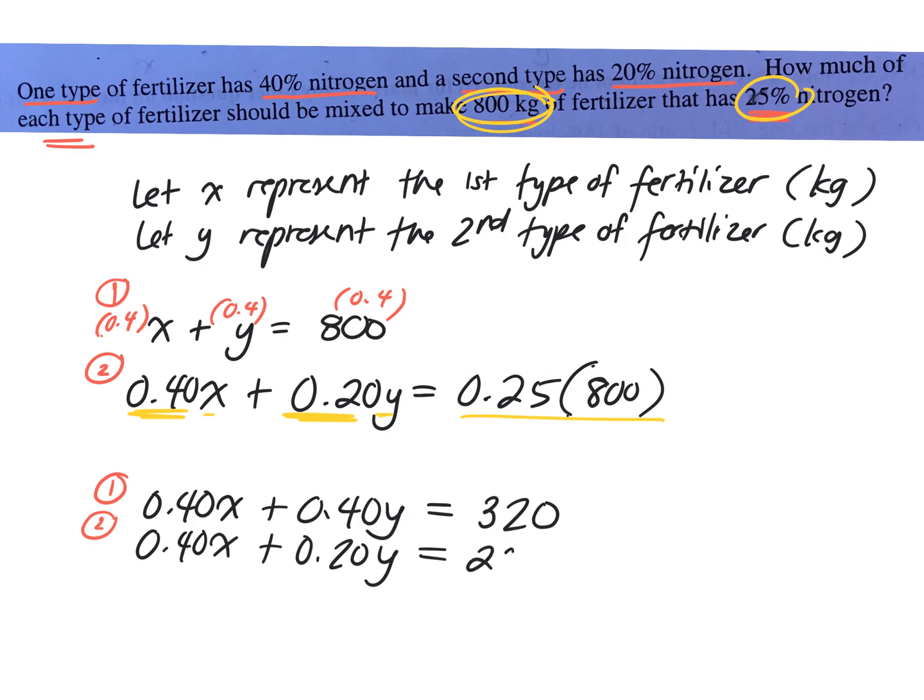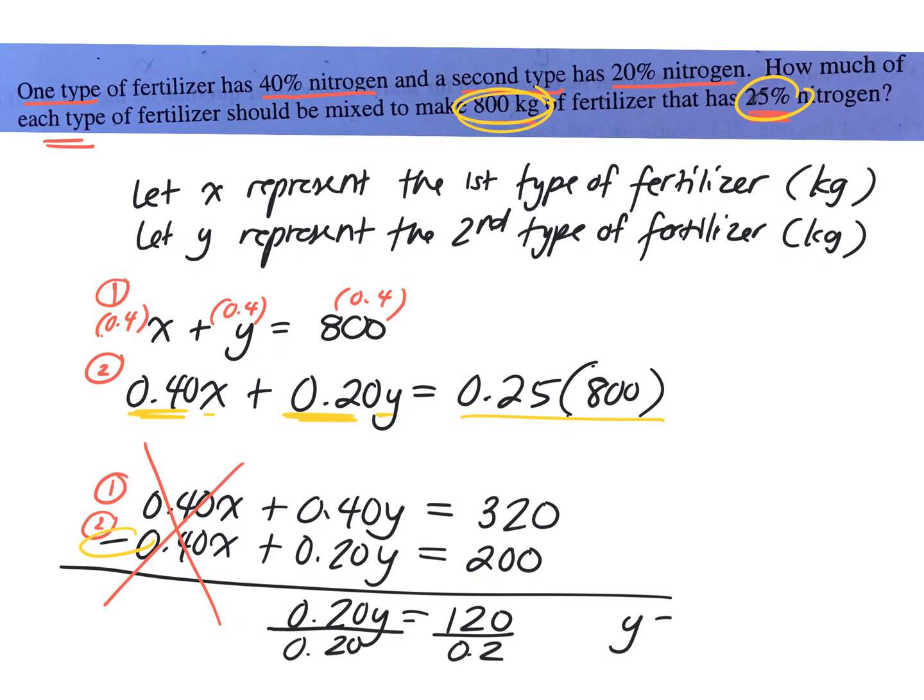Now are we going to add or subtract to eliminate? Subtract, good. We're subtracting because that's the way we're getting rid of our x variable. So we have to subtract everything, so 0.2y, and then 120 equals 120. How do I solve for y? Divide by 0.2. Good. So y equals what? 120 divided by 0.2 equals 600.